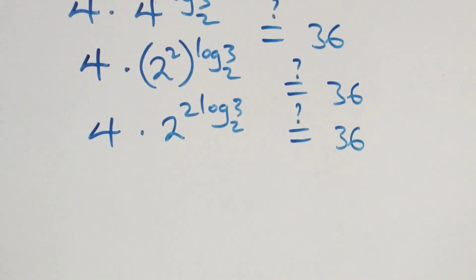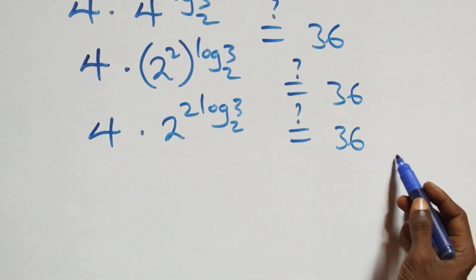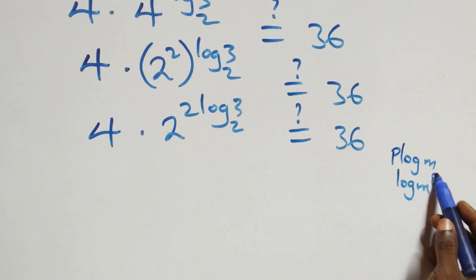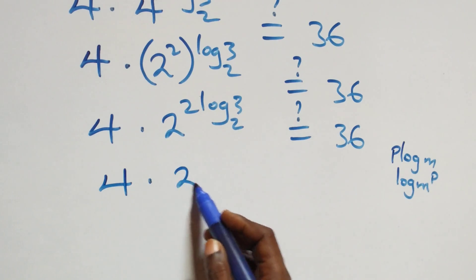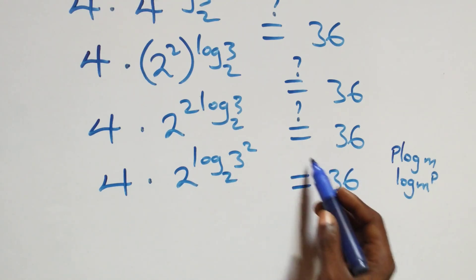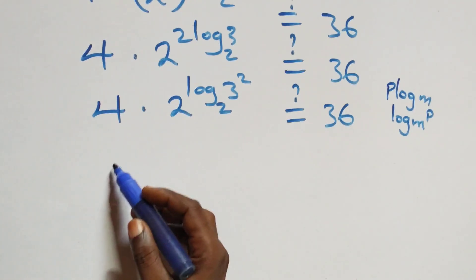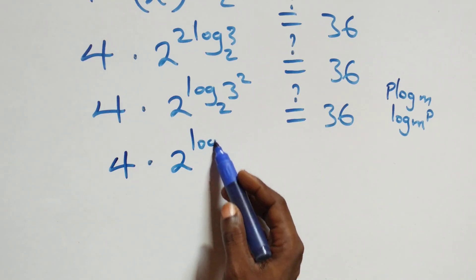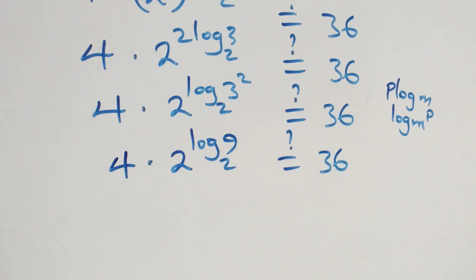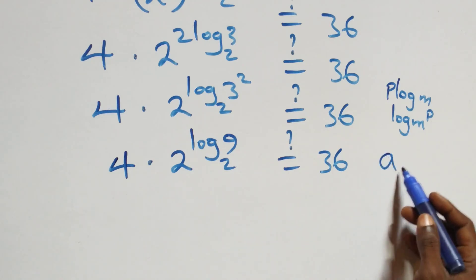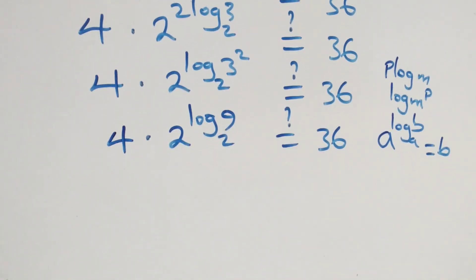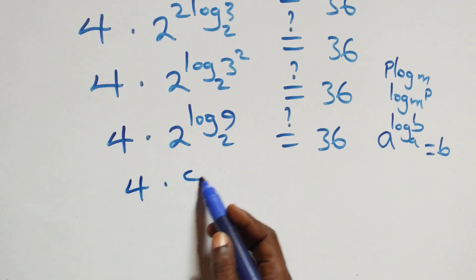We reverse the power-log rule (p log m = log m^p), so 2·log₂(3) becomes log₂(3²). This gives 4 times 2 raised to the power log₂(9). By the logarithm law a raised to the power log_a(b) equals b, this simplifies to 4 times 9, which equals 36.